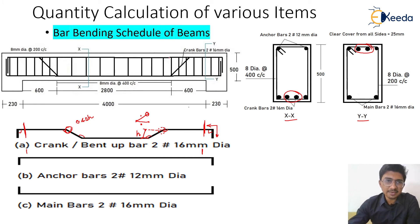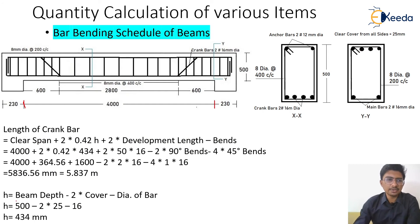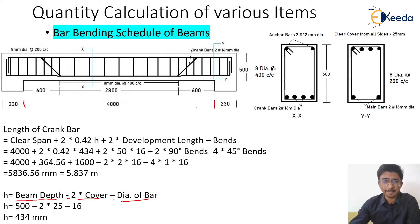To calculate h: it is the center of the bar at the top to the center of the bar at the bottom. We take the total depth of the beam, minus the two side covers on both sides, minus one bar diameter. So the formula for h is: h = total beam depth − 2 × cover (top and bottom) − 1 × bar dia. This value comes out to be 434 mm.